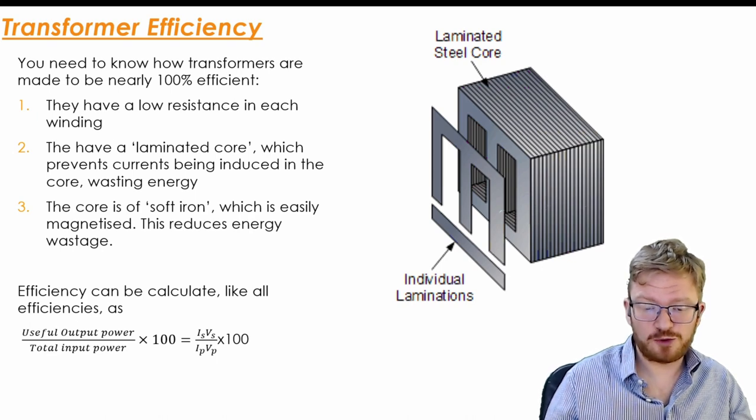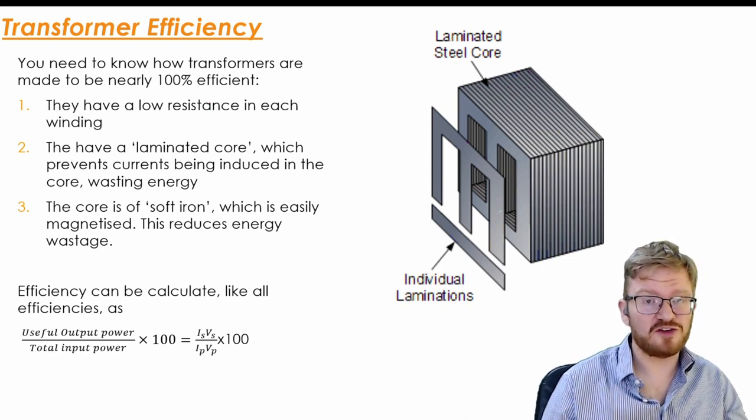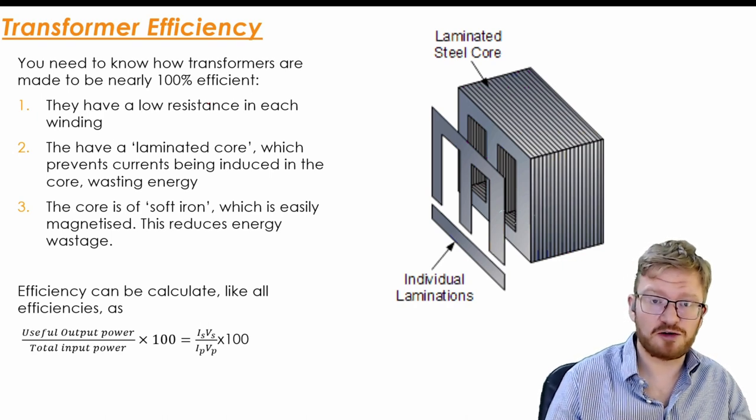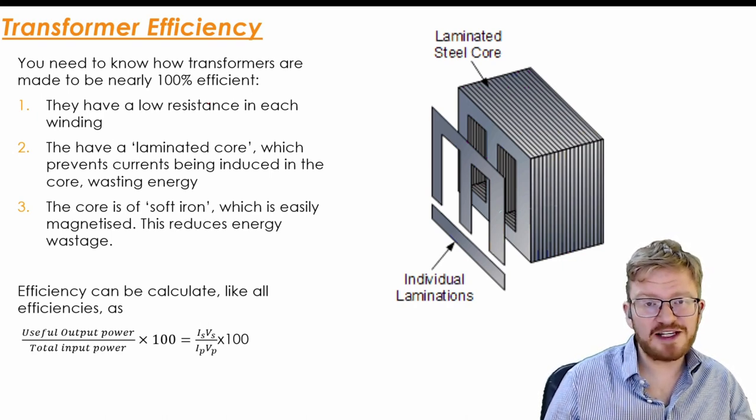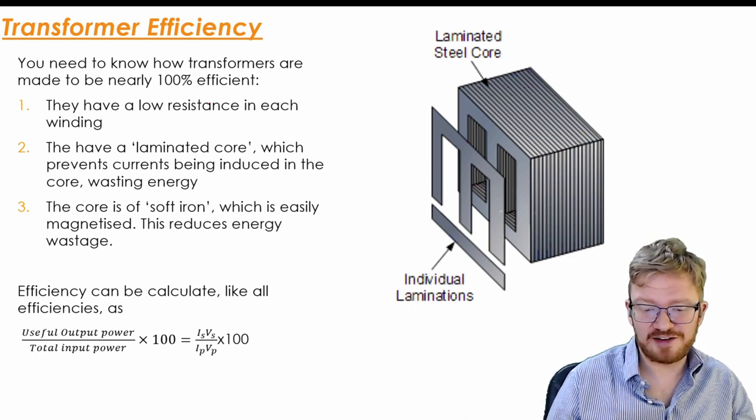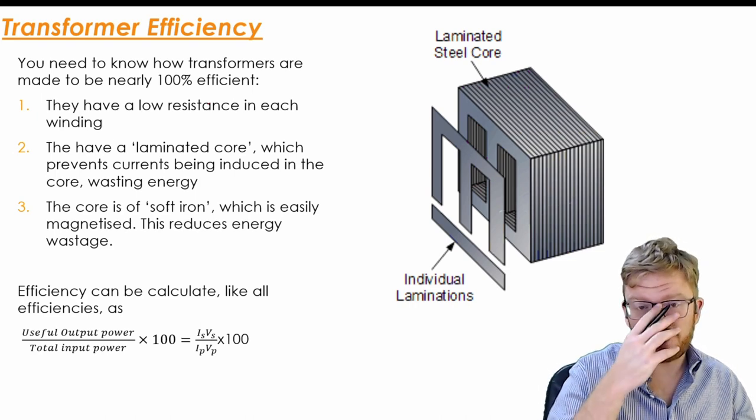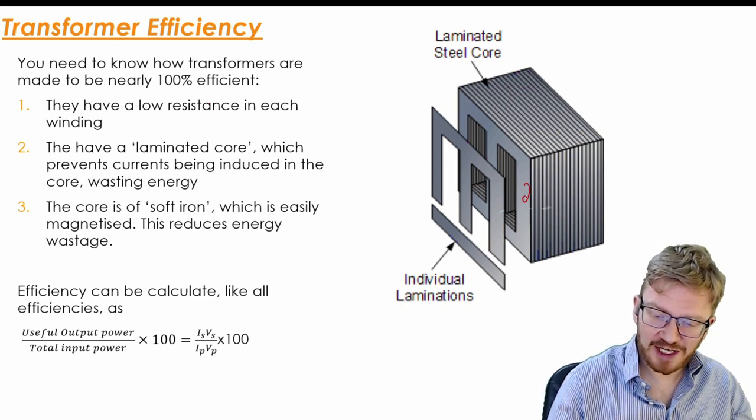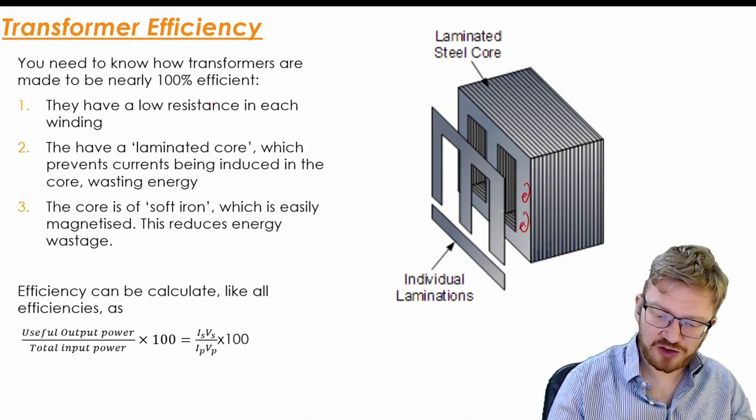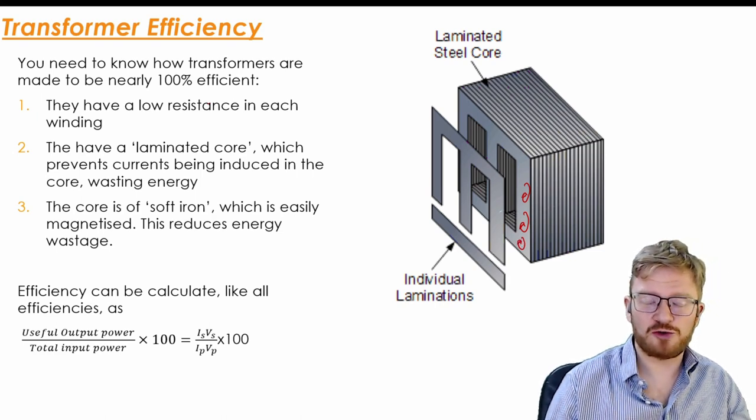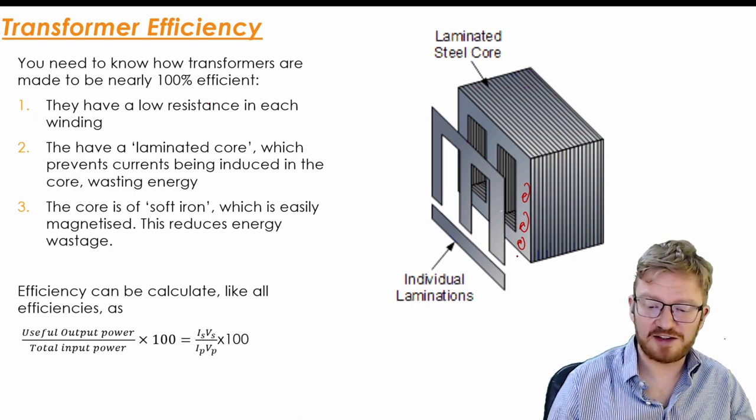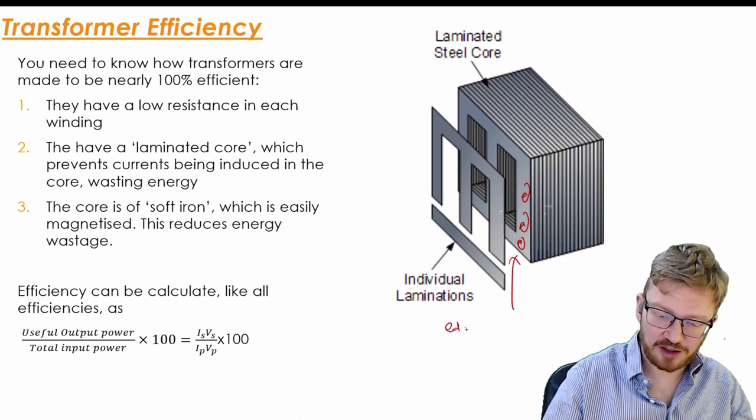To make transformers efficient, you need to have low resistance in each winding. Otherwise, obviously you're going to use up voltage just pushing your current around the winding. And they also need to have a laminated core. If you remember what we said right at the start when thinking about Lenz's law, what can happen is if you've got a changing magnetic field through your transformer, then you can start to set up currents inside there. And these are the eddy currents.